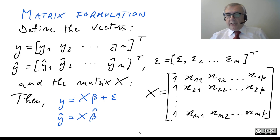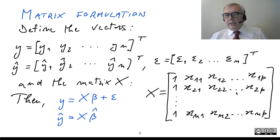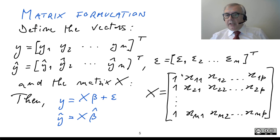Therefore, this is our regressor matrix — a column of ones and then the features. Each row has to do with one of the training pairs: here we have the vector X1 with each entry — X1,1; X1,2; and so on. The number of rows is equal to the number of training data N, and the number of columns is equal to P plus 1.